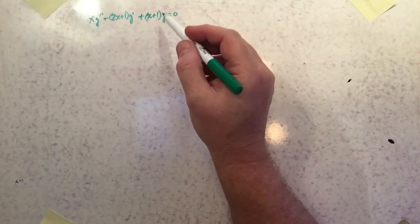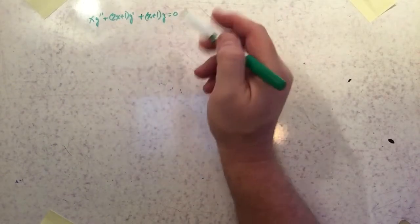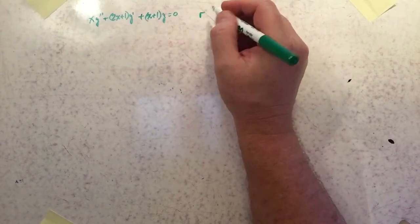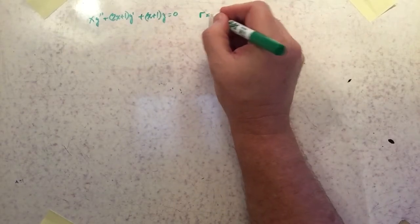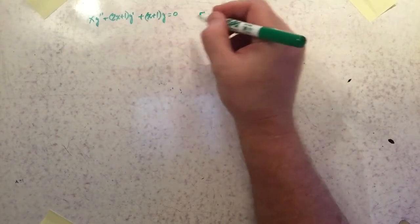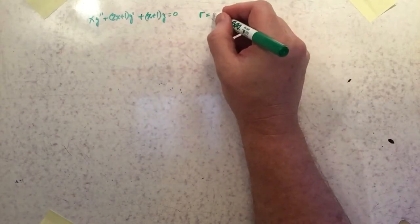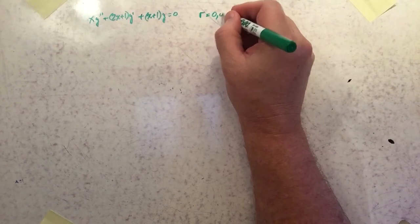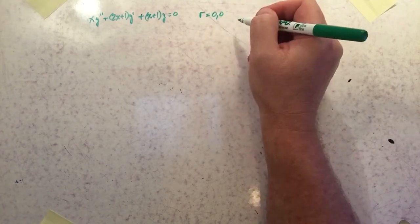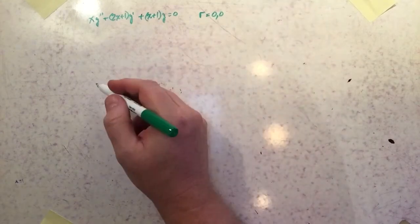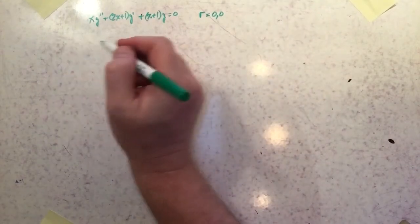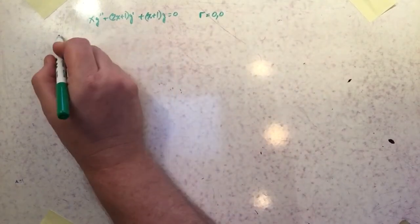I actually worked out the recursive relationship for this one earlier, so we won't go through that again. The indicial equation gives a double root at zero — that makes it a Case 2. But we're going to use the shortcut to get the second solution, so right now we're just focused on the first solution.